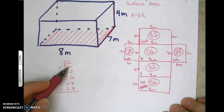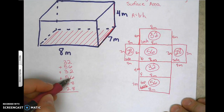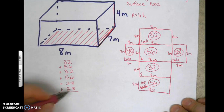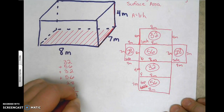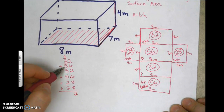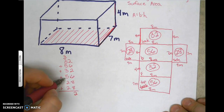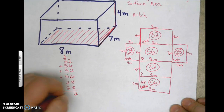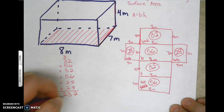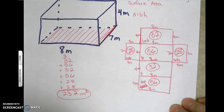Adding those up: 32 + 56 + 32 + 56 + 28 + 28 gives us 232. Since all areas are in square units, the surface area is 232 meters squared.